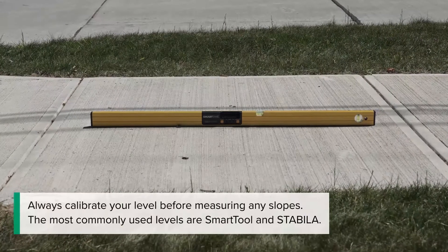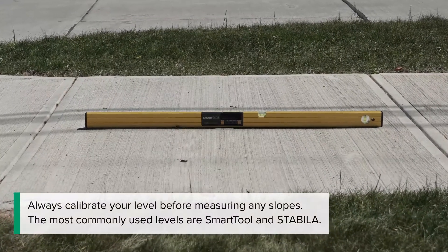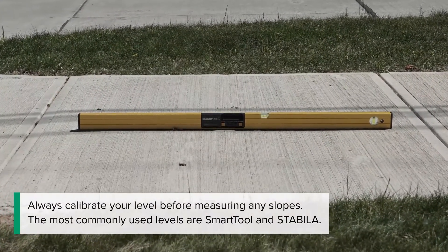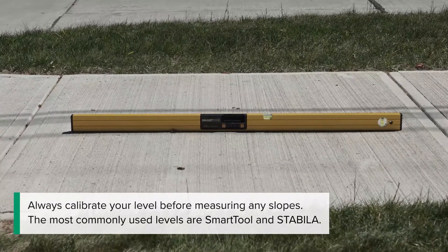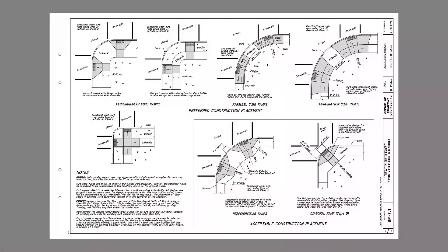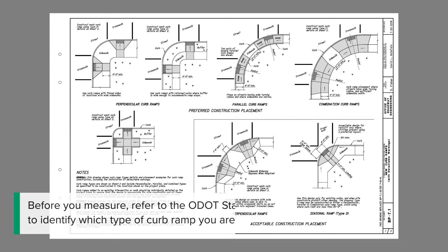Always calibrate your level before measuring any slopes. The most commonly used levels are Smart Tool and Stabila. Before you measure, refer to the ODOT Standard Construction drawing BP 7.1 to identify which type of curb ramp you are evaluating.